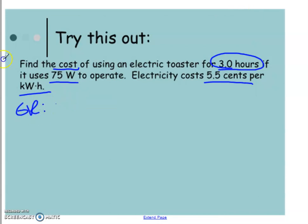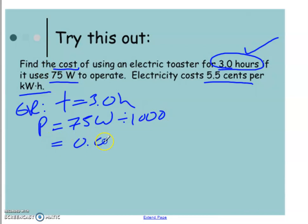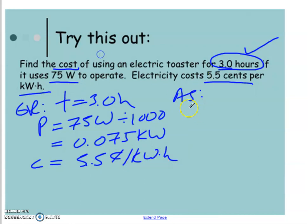So we have the time, and in this case, our time is already in the correct units that we need, hours. Power 75 Watts, which we're going to divide by a thousand to get into kilowatts, 0.075 kilowatts. And the cost we're given is 5.5 cents per kilowatt hour. So we're going to do the total cost is equal to power times time times cost.